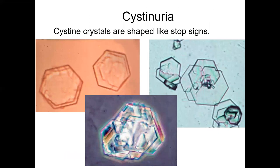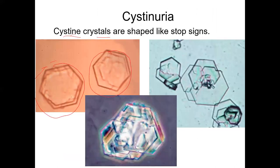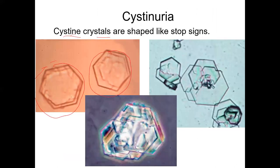This is cysteine in the urine — cysteine, which is an amino acid. You can see it crystallizing. This one looks like stop signs, so these are cysteine crystals. This is more of a visual to go along with the urine analysis.